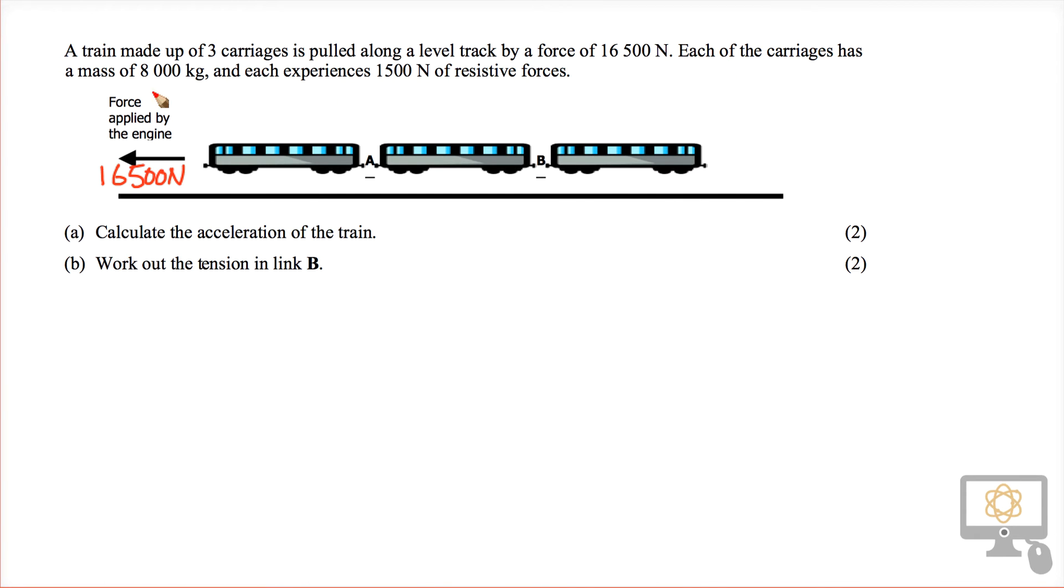Each carriage has a mass of 8,000 kilograms and experiences 1,500 newtons of resistive forces. So that means overall in reverse there are resistive forces of total 4,500 newtons.